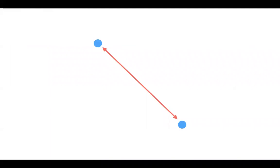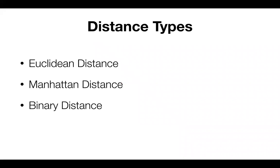So what is distance? Distance is basically what it is — when you have two places and you talk about the distance between those two points, two places, two cities, or whatever, that's what it is. It's very simple. The concept itself is very intuitively familiar. There are many ways to calculate distance, but I want to talk about three very common types of distance methods.